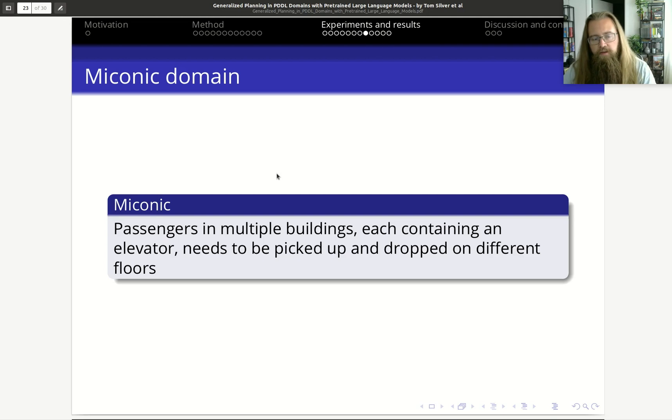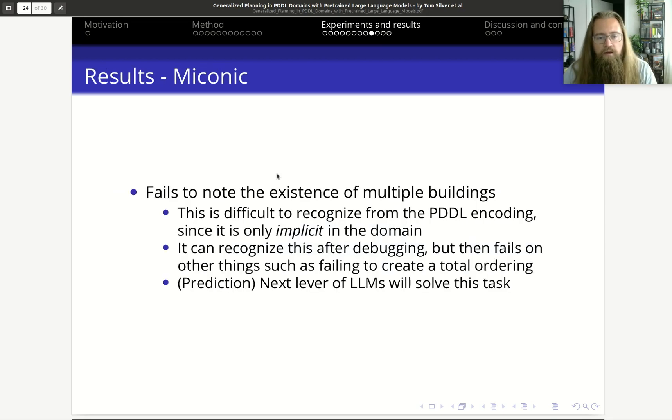For the Miconic domain, I didn't go through it before, but here you have passengers in multiple buildings where each contains an elevator, and the people need to be picked up and delivered at different floors. Here it fails because it doesn't know that there exist multiple buildings. Actually, to do this, one would need to do some reasoning because there's not explicitly multiple buildings defined in the domain, but it's more like if one floor is never above or below another floor, we know that these are from separate buildings. So that's the case in Miconic - it requires some reasoning to understand the domain.